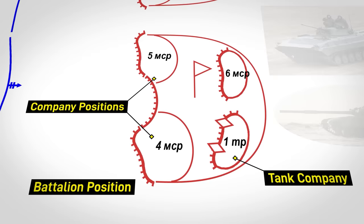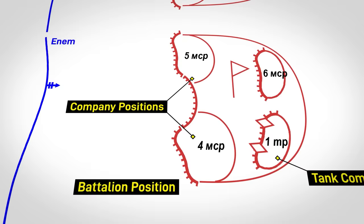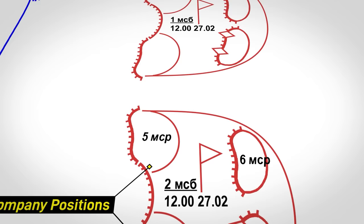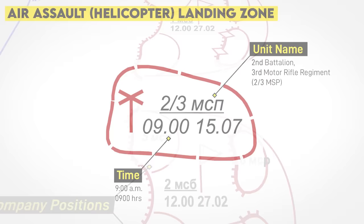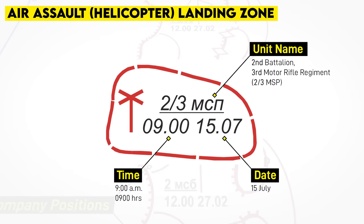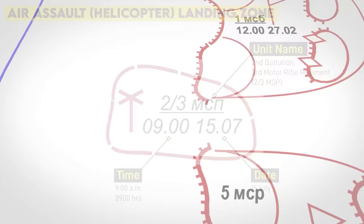These bean-looking shapes depict the rough location of the battalion fighting positions, with a thick, spiky line being the direction the defense is facing. On a real map, these positions will often be annotated with a unit's name, and the time and date they occupied that position. The time, written in a 24-hour format, will be followed by the day and month. For the Americans out there, the day will always come before the month.